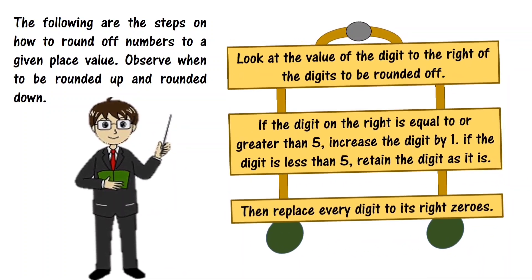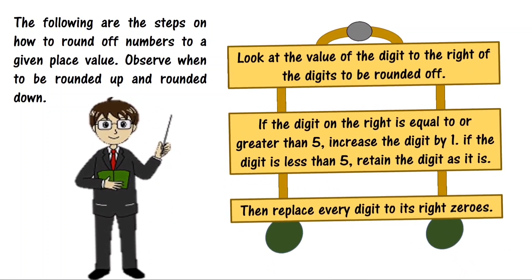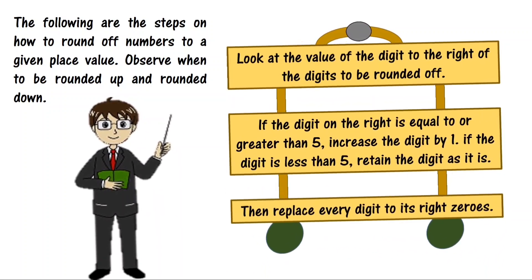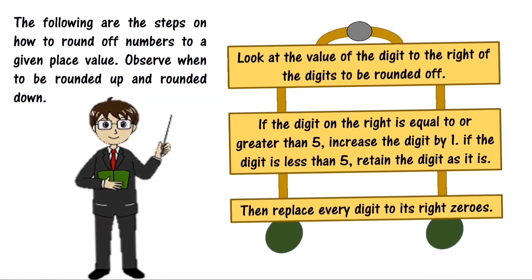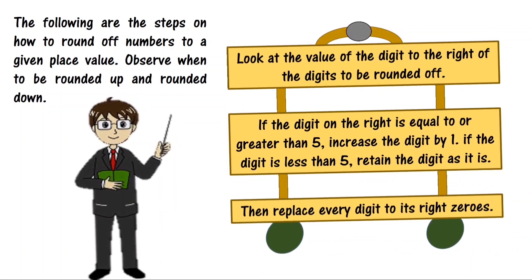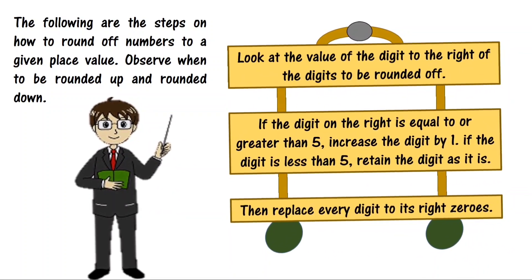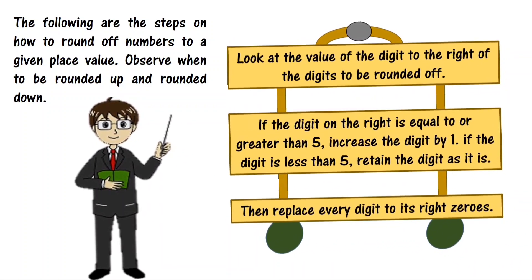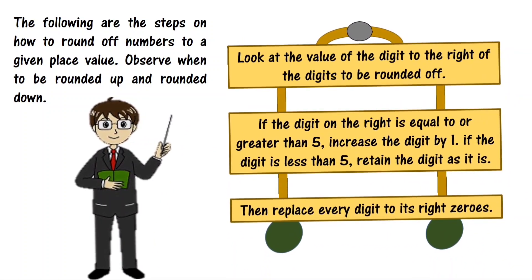The following are the steps on how to round off numbers to a given place value. Observe when to be rounded up and rounded down. First, look at the value of the digit to the right of the digits to be rounded off. Second, if the digit on the right is equal to or greater than 5, increase the digit by 1. If the digit is less than 5, retain the digit as it is. And last, replace every digit to its right with zeros.